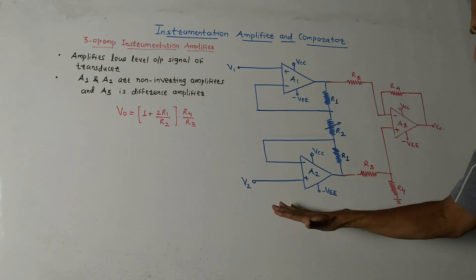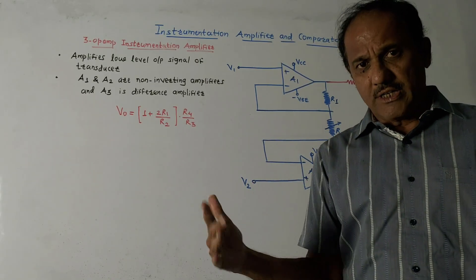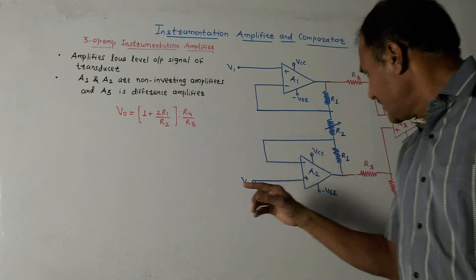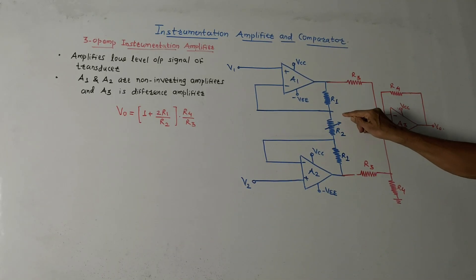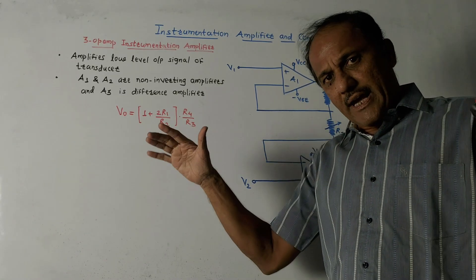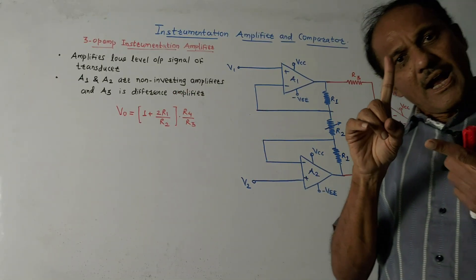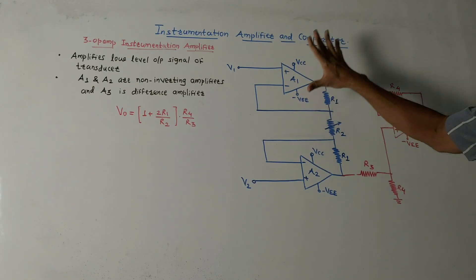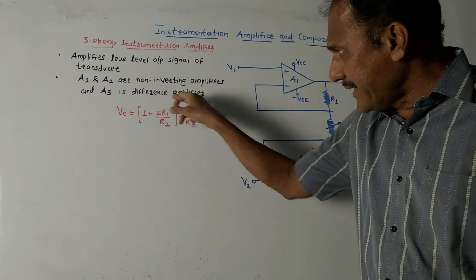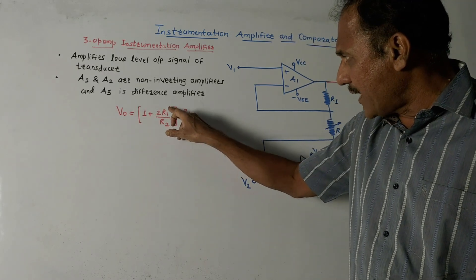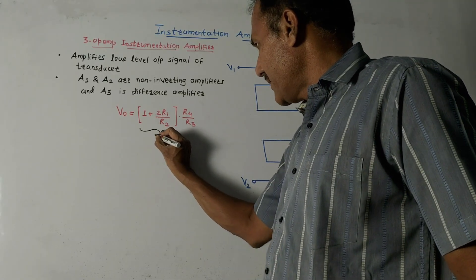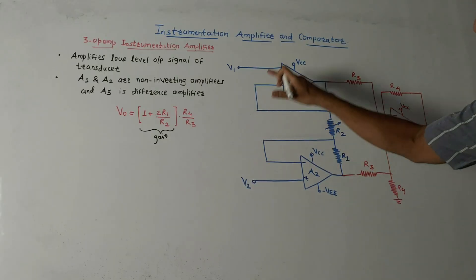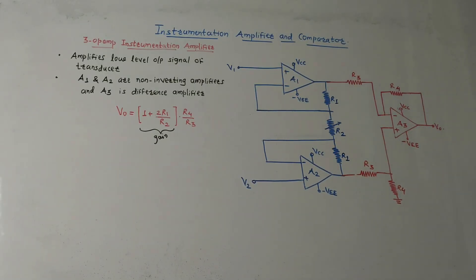There are many advantages of this amplifier. It has very high input impedance and very low output impedance, so the loading effect can be avoided. Using a single resistor R2 — shown as a variable resistor or potentiometer — we can control the gain of the instrumentation amplifier. Another important characteristic is that the CMRR, that is common mode rejection ratio, is very large. The output voltage equation is: V0 = (1 + 2R1/R2) × (Rf/R3), where the term (1 + 2R1/R2) indicates the gain.